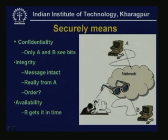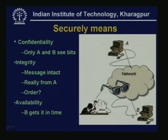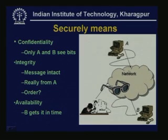Integrity: the message must reach from A to B intact — without any modification on the way. That is very important for many kinds of services. Sitting at B, you are getting some message down the network, and you want to make sure it is really from A. These are integrity issues — whether messages are coming in order. Finally, availability: B gets the service in time. Even if all lower layers are working perfectly, B may not get the service from A. So the three main issues are confidentiality, integrity, and availability.